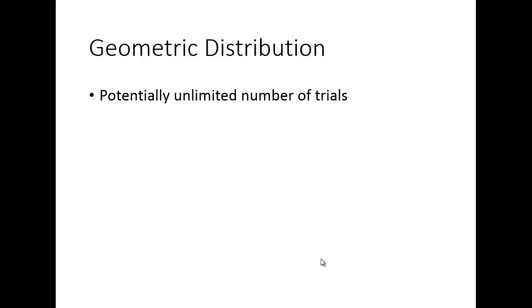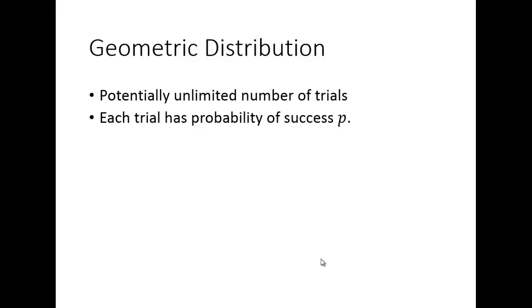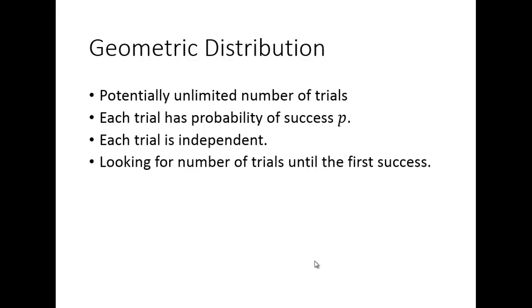Now we look at the geometric distribution — a similar setting but a little different. Here we keep doing trials over and over again, potentially an unlimited number of them. Each trial has a probability of success p, each trial is independent, and we're looking for the number of trials until the first success.